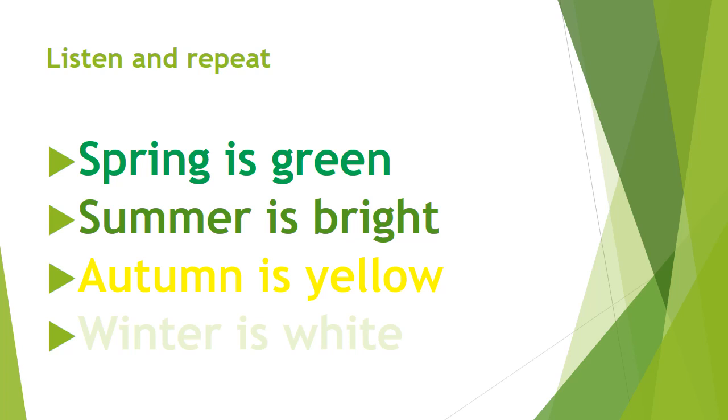Now once more, please. Spring is green. Summer is bright. Autumn is yellow. Winter is white. Here we describe the seasons with their colors. Spring is green color. Summer is bright color. Autumn is yellow color. Winter is white color.